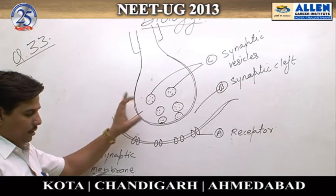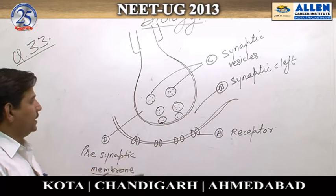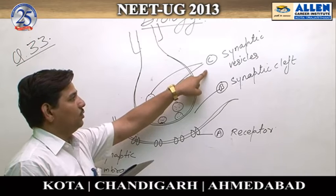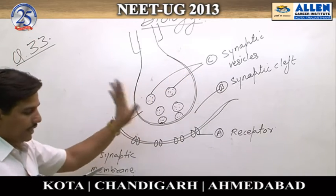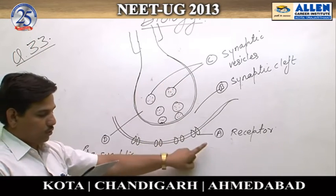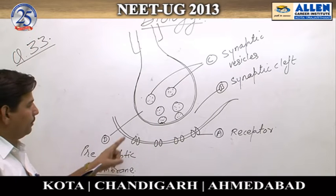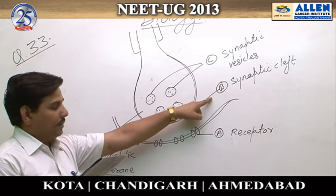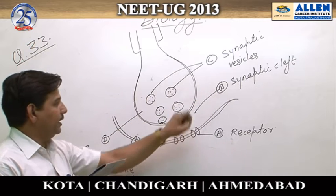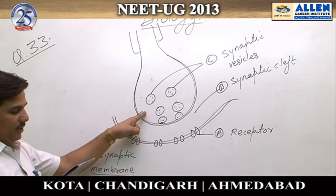In option two, A represents receptors — that is correct — and C represents synaptic vesicles — that is also correct. So option two has correct labeling for both A and C. In option three, B is stated as synaptic connection, but B is actually the synaptic cleft. D is stated as potassium ion, but D is the presynaptic membrane — so option three is wrong.